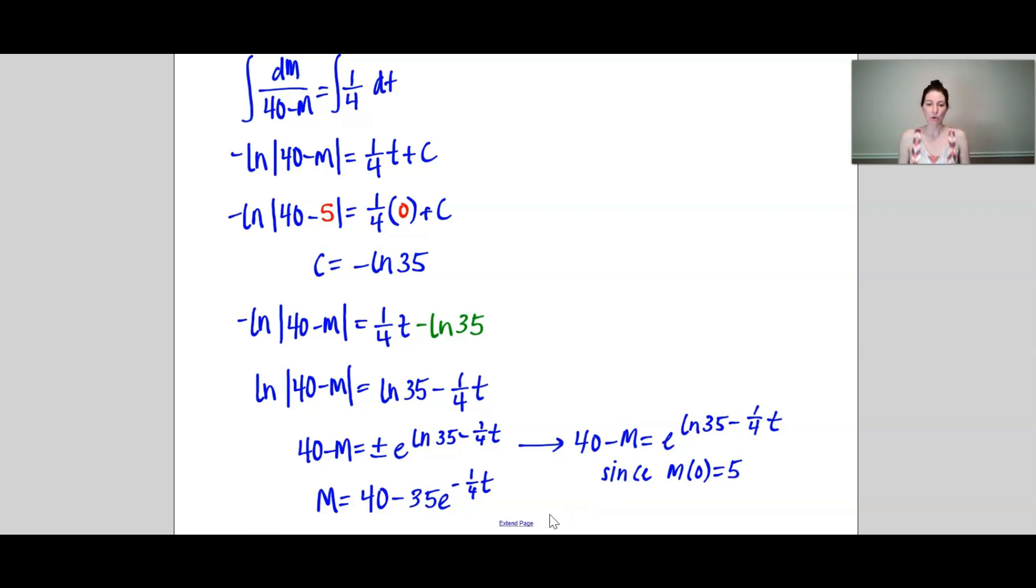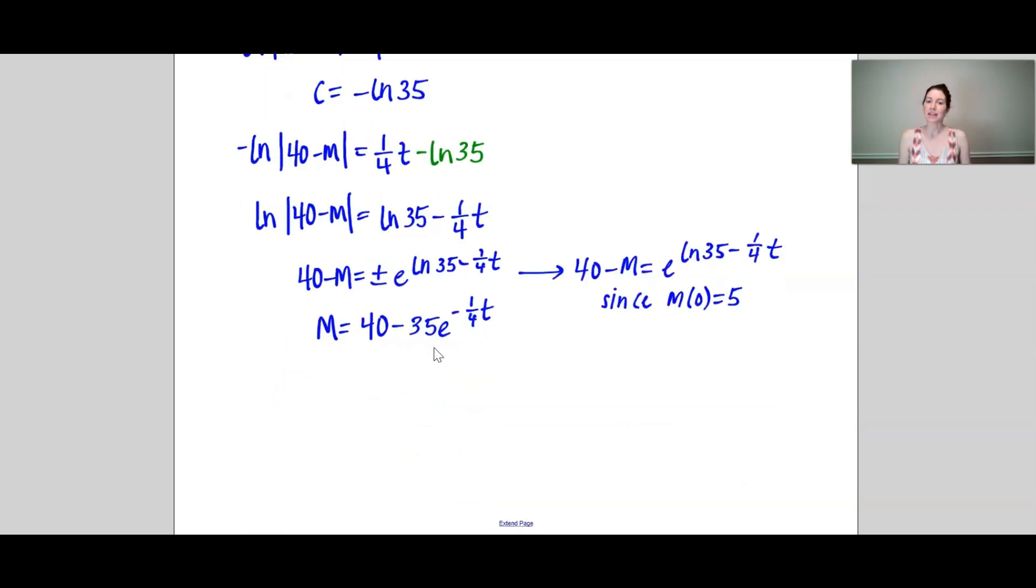And then once you solve for M, I get this equation right here: 40 minus 35e to the negative 1/4 t. And I do understand that there are different ways you can write this, but I decided to stop right there.